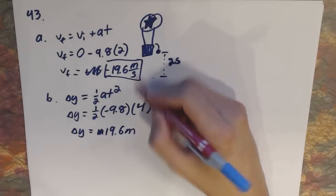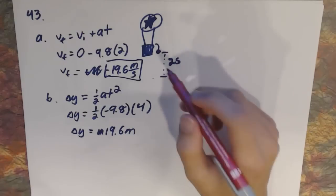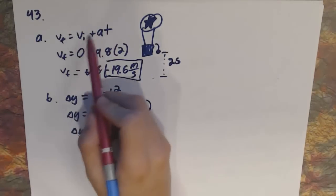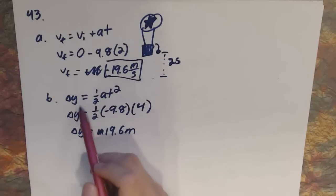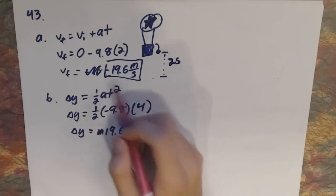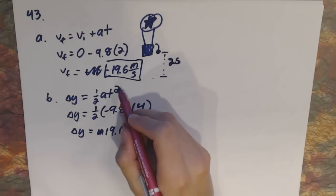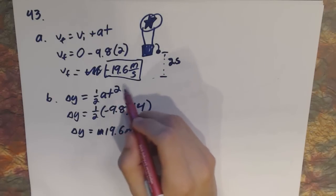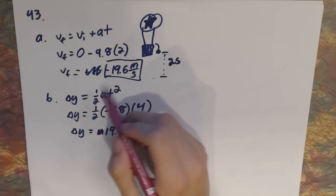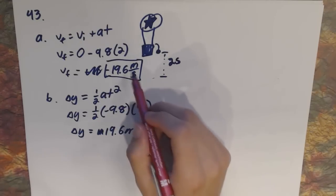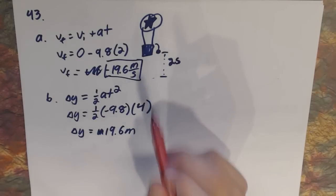Note that parts A and B turned out to be the same numerical answer — that's usually not going to happen. Velocity is a linear relationship (just acceleration times time), but position or change in y is a quadratic relationship with t-squared. It just happens to work out at t equals 2 that these are the same answer. At any other value they won't be the same, so never assume they are.